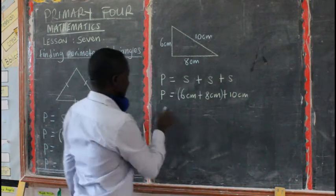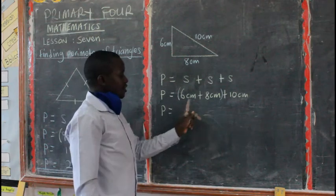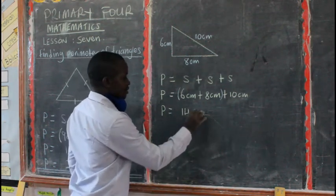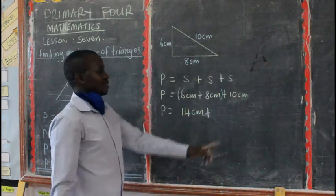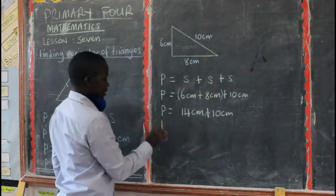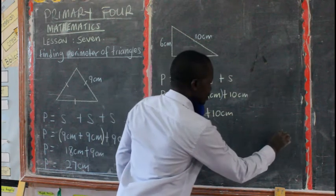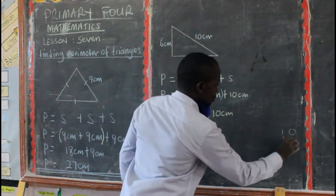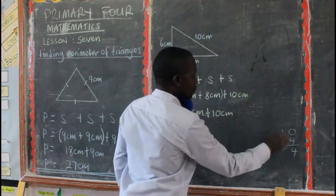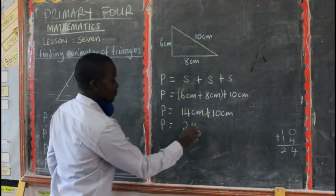Then we are left with one here. So perimeter is equal to, 6 cm plus 8 cm, this is 14 cm plus 10. Then 10 plus 14, we can add it vertically. Here, 4 plus 0 is equal to 4, 1 plus 1 is equal to 2. So perimeter here is equal to 24 cm.